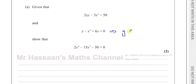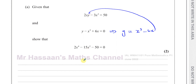Taking this equation and making y the subject: add x cubed to both sides and take away 6x from both sides, giving y equals x cubed minus 6x. Now in the first equation, I can replace the y with x cubed minus 6x. So I have 2x times (x cubed minus 6x) minus 3x squared equals 50. We've made the equation with just x's in it — we've eliminated the y.